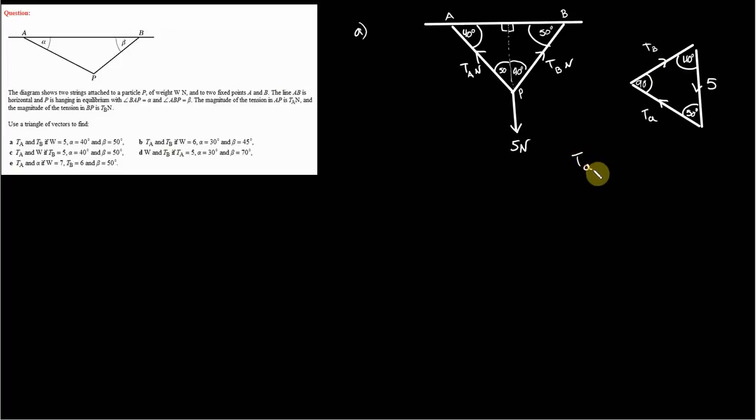So let's do that. T sub A, we're just going to use the sine rule. So T sub A is going to equal T sub A over sine 40. And of course, we're going to set that equal to 5 over sine 90.